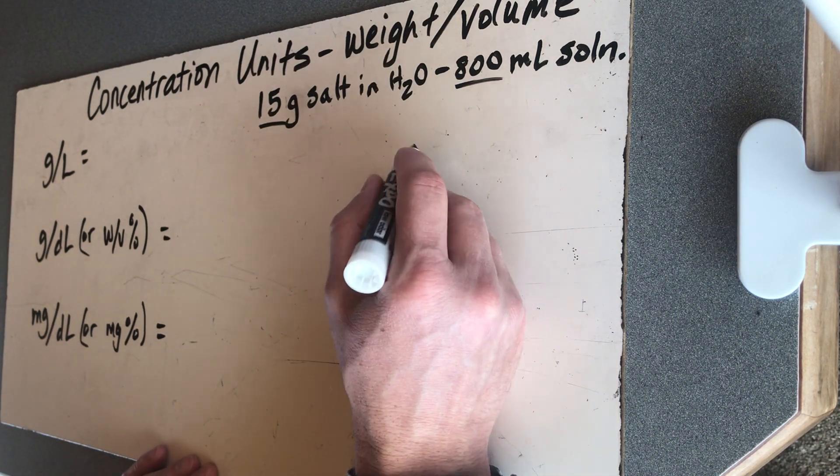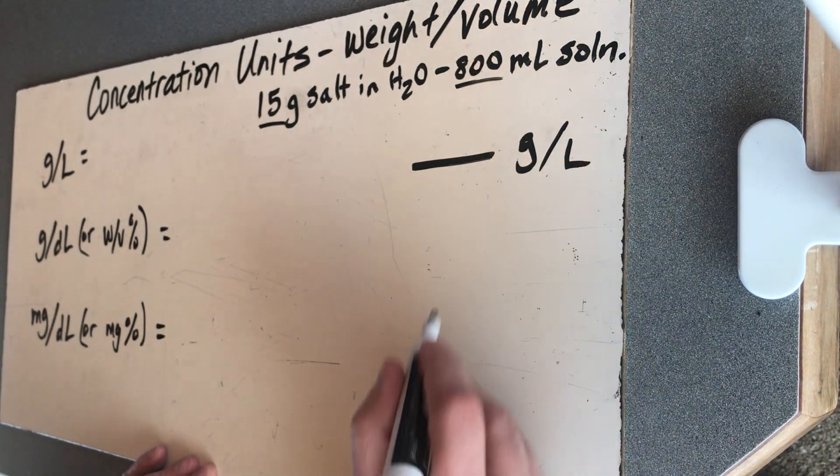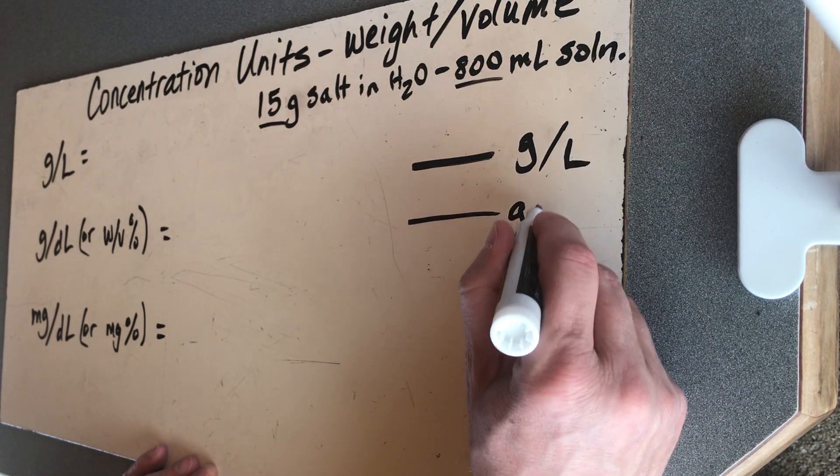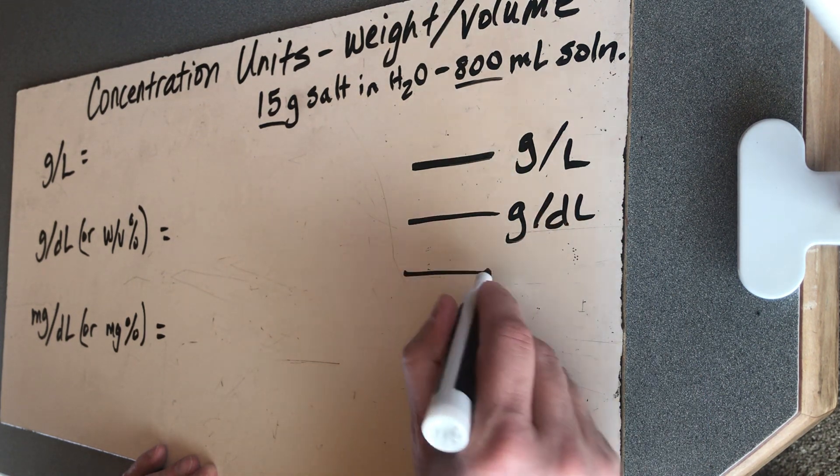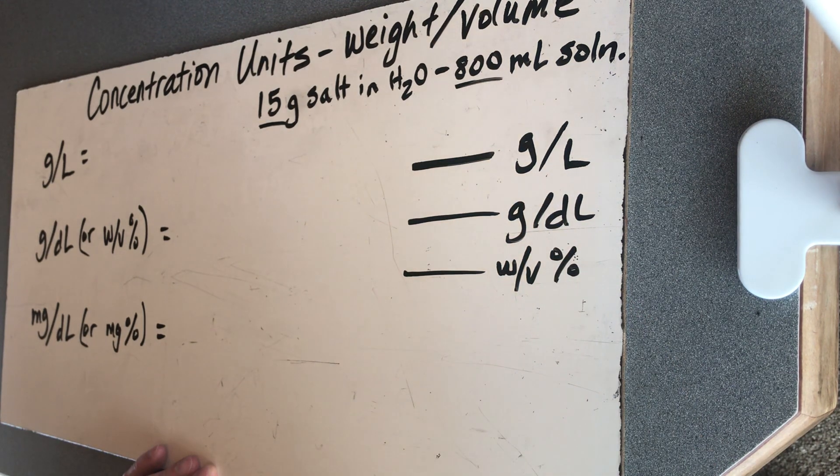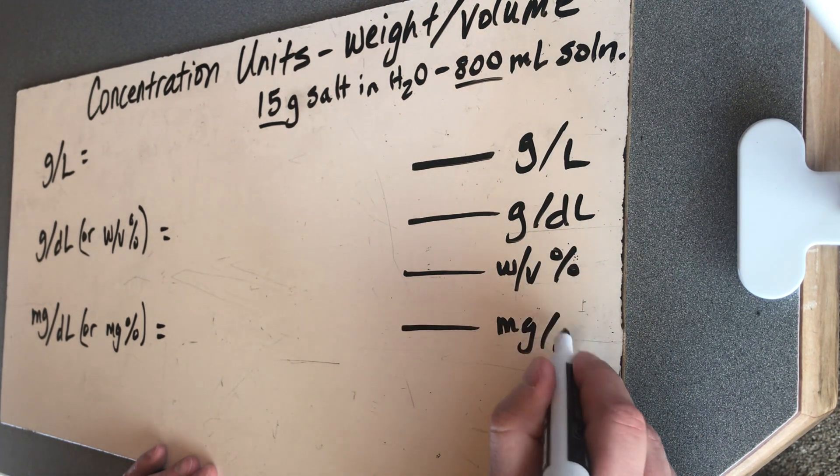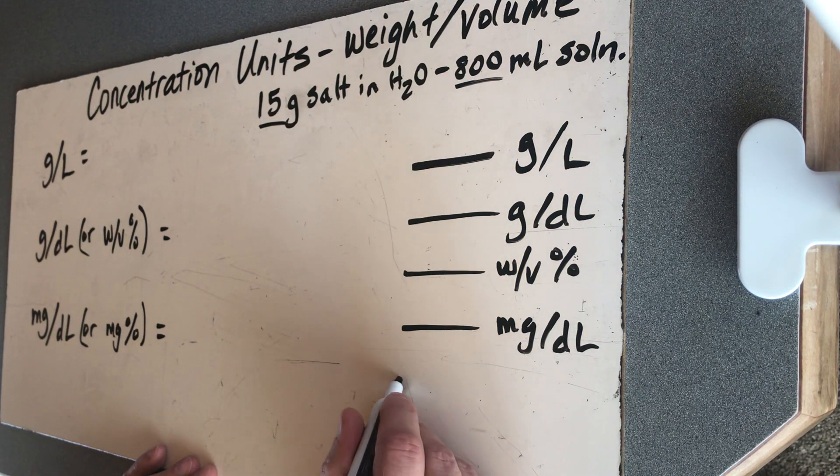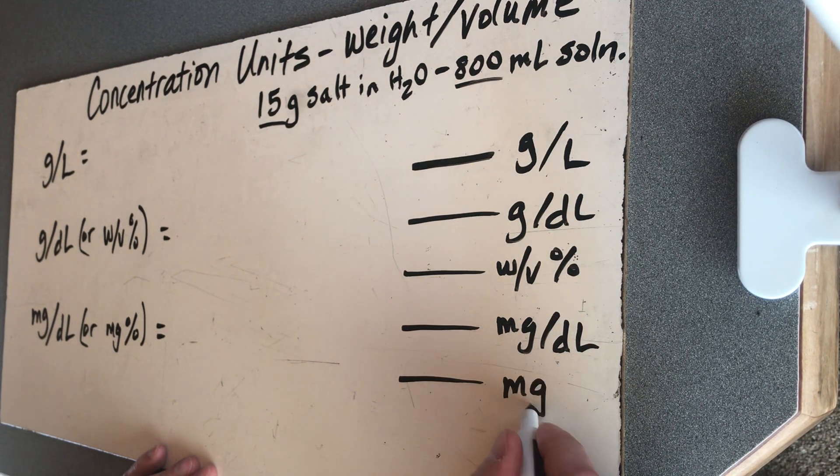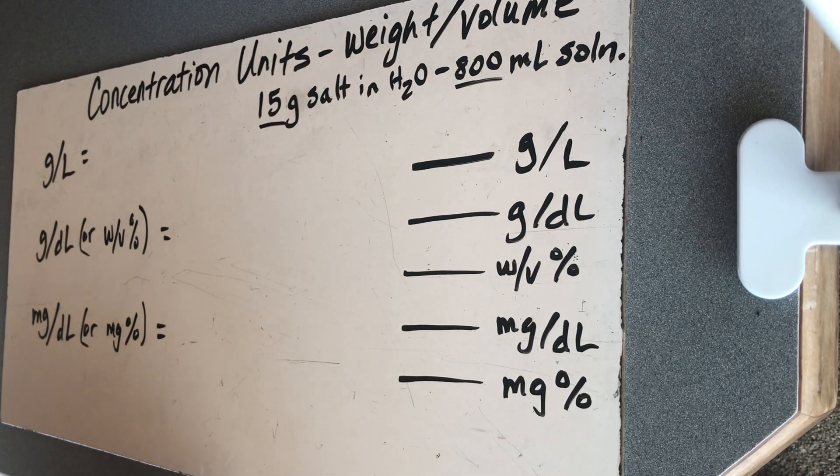And you look at this and say, I thought we only had three different units. Let's take a look at what these are going to end up looking like. We're going to have grams per liter. We're going to have grams per deciliter. We're also going to have something called a weight to volume percentage, and we'll get into that in just a moment. Then we're going to have milligrams per deciliter. And then we're also going to have something referred to commonly as a milligram percentage. So let's just take a look at those five things.